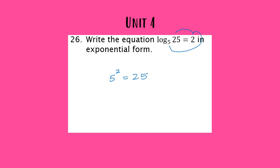This one in particular is something you can probably double check in your head — five squared is equal to 25 — which matches the right side of the equation. It's a good idea to double check that when you go into exponential form, the expression on the left equals your answer on the right.